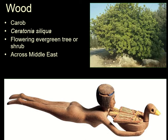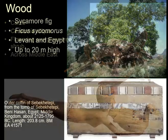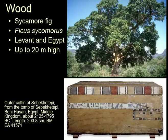Carob is also found across the Middle East. Again it's not a very big tree but you can make quite nice things out of it, and of course you get beans which people like to eat instead of chocolate. The sycamore fig is found in Egypt and the Levant and makes quite a nice tree. There's a couple of coffins from this chap Sebeckhepete — this is his outer coffin, which is made of sycamore fig.